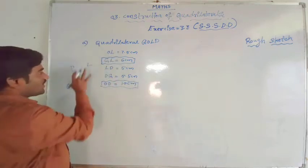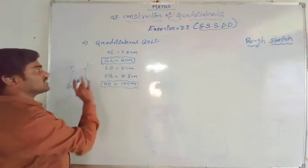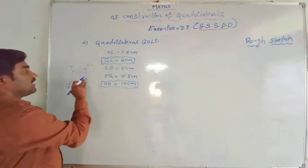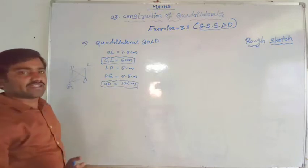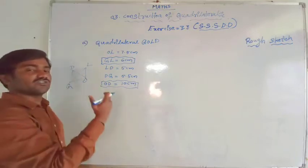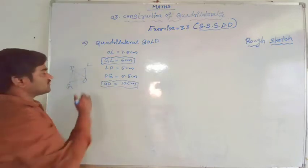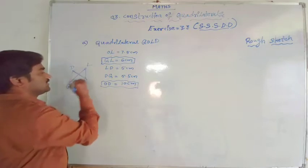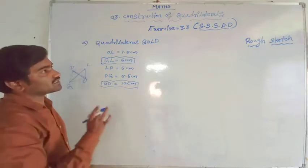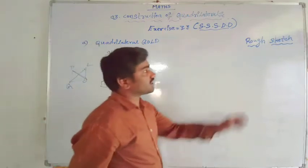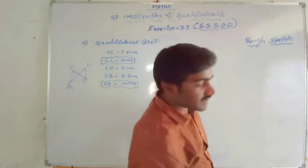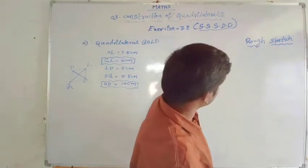GL and OD are the diagonals - these are the vertices at opposite corners joined by a line, which is known as diagonals. Now let us construct this. Before we construct, we know that we have to draw a rough sketch first, so let us draw the rough sketch.